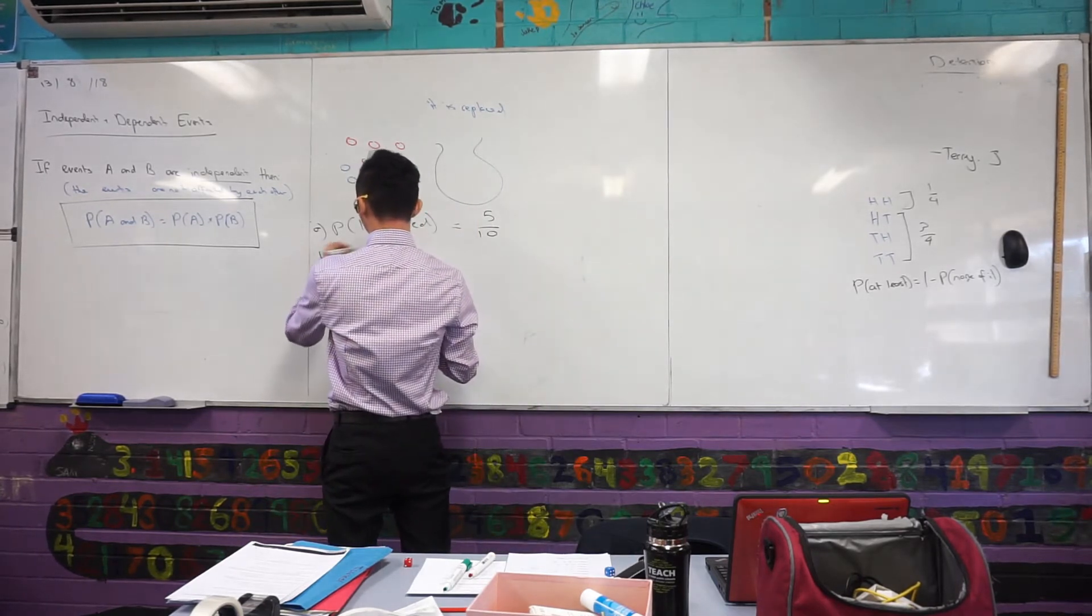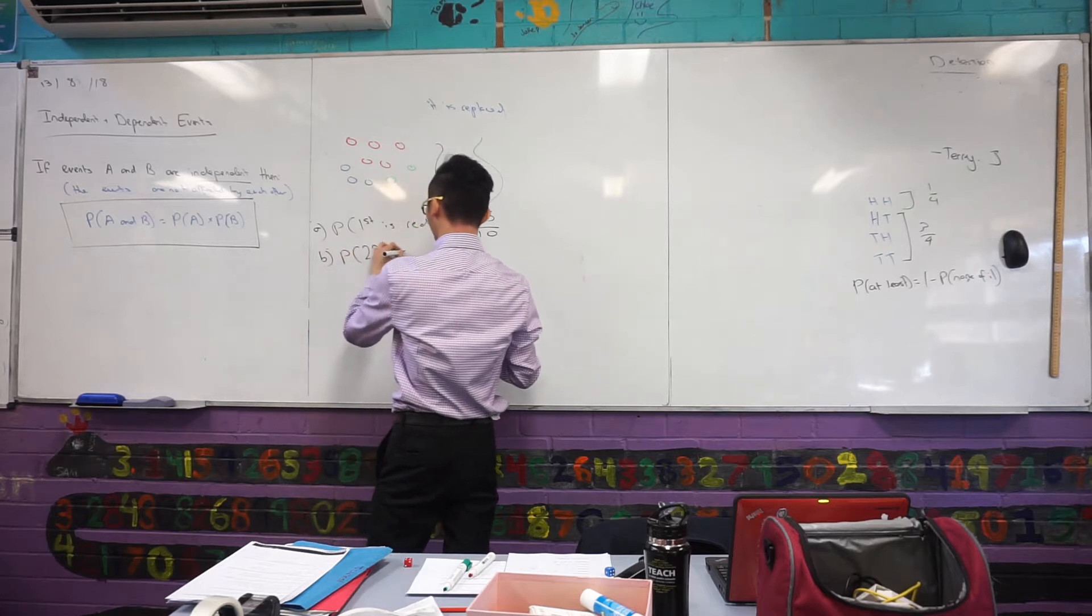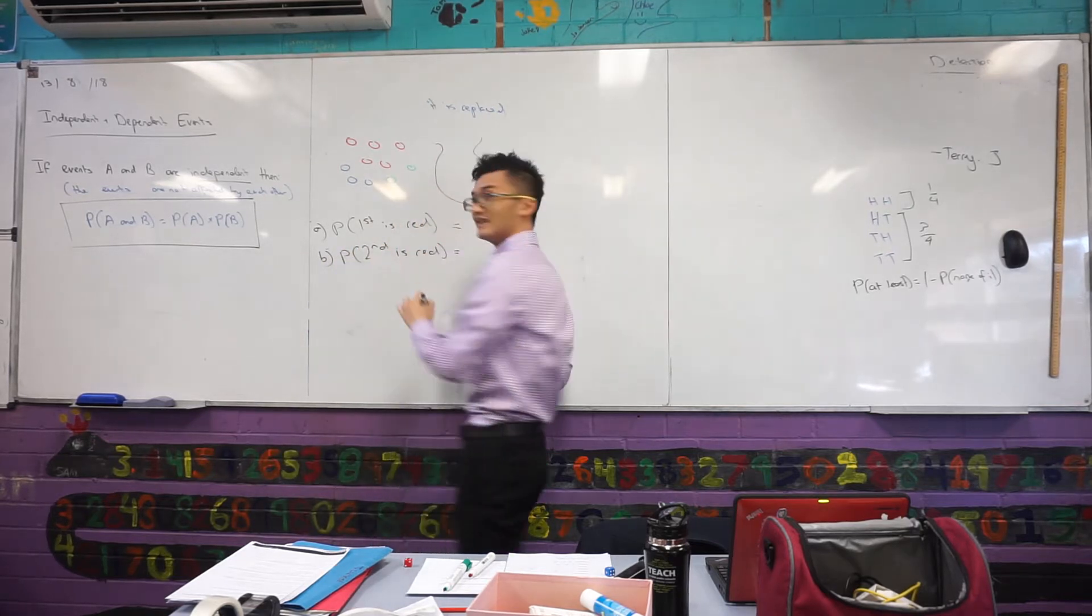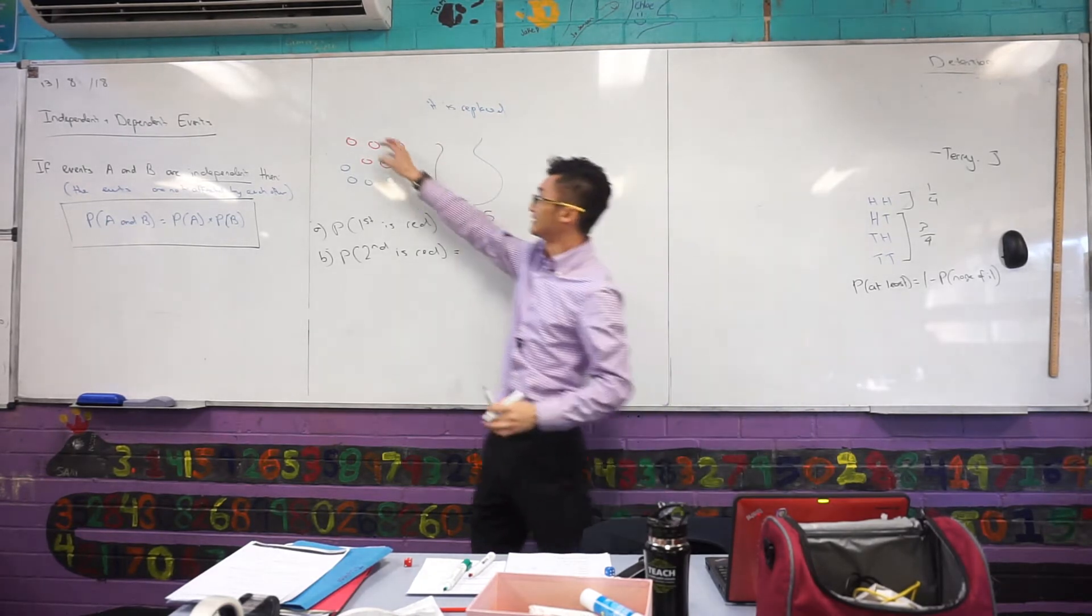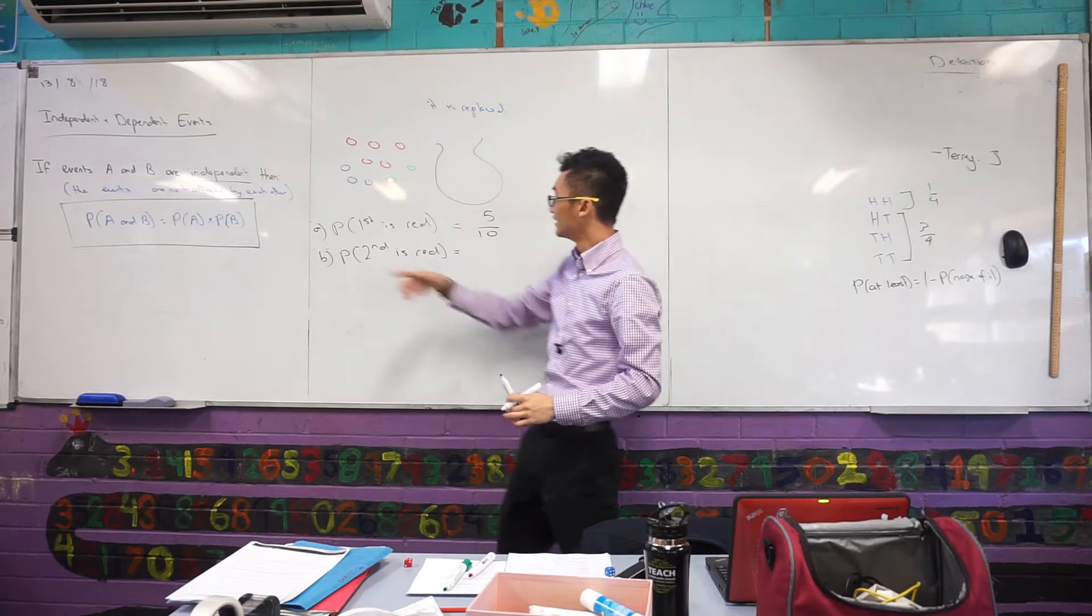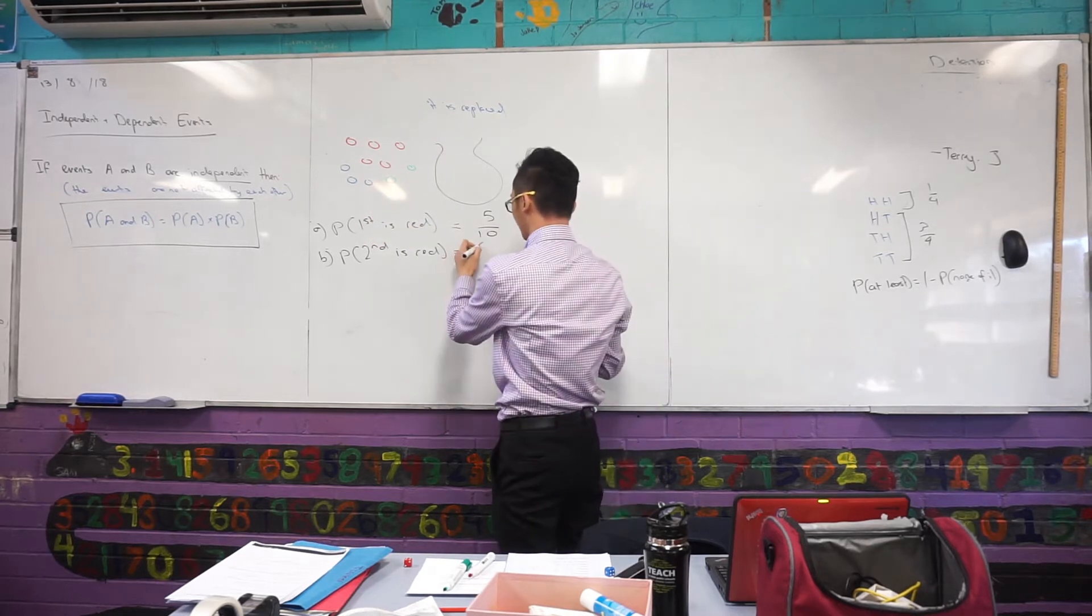Alright, that's the first one, second one. What about the probability that the second one is red? It's still half, right? Because the key word to see here is that it's replaced. So I can take one out, but then I'm putting it back in, it's replaced, it's still going to be 5 out of 10.